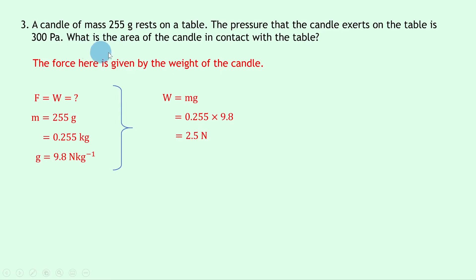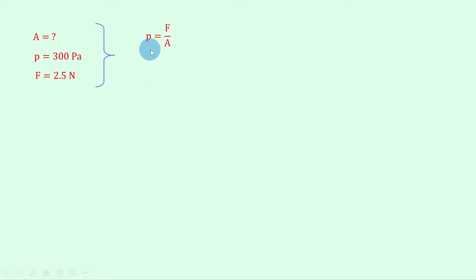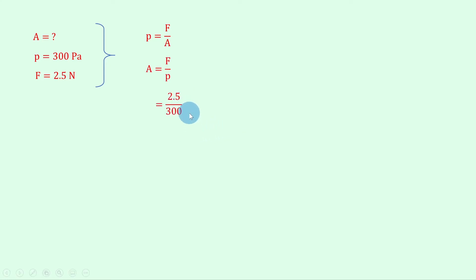However we're not done, because we're trying to find the area. Writing down what we know: the pressure is 300 pascals and the force is 2.5 newtons from above. Writing down p equals f over a and rearranging gives a equals f over p. Substituting in gives 2.5 divided by 300, which gives a final answer of 8.3 times 10 to the minus 3 meters squared.